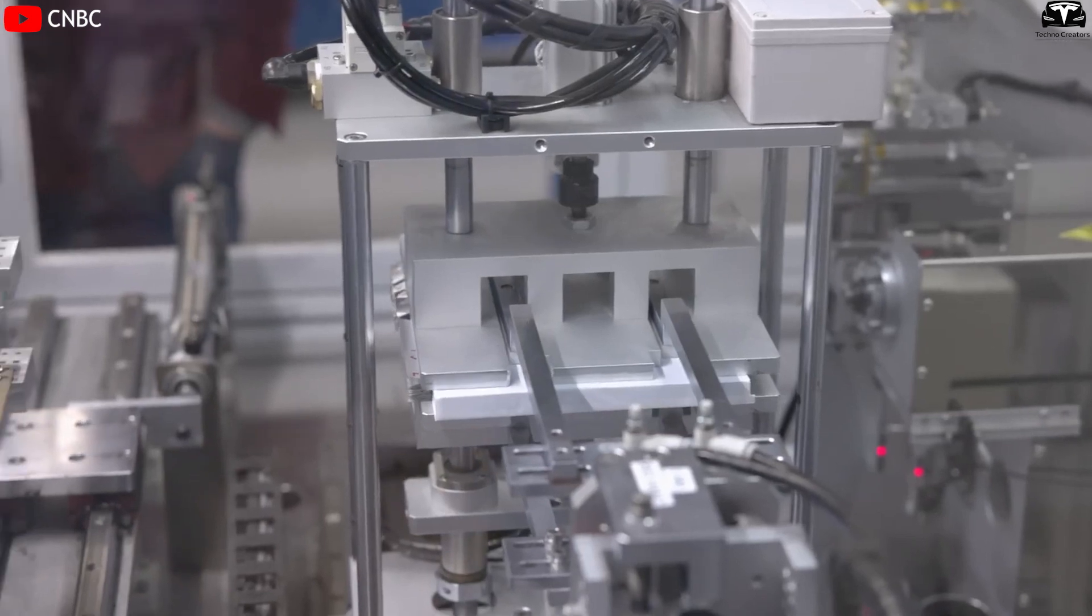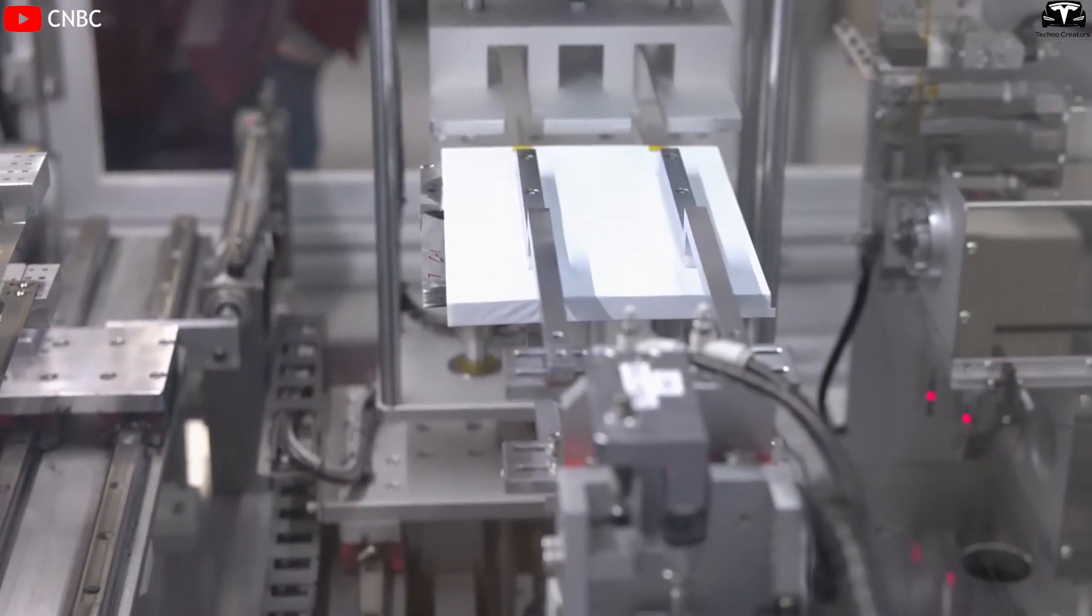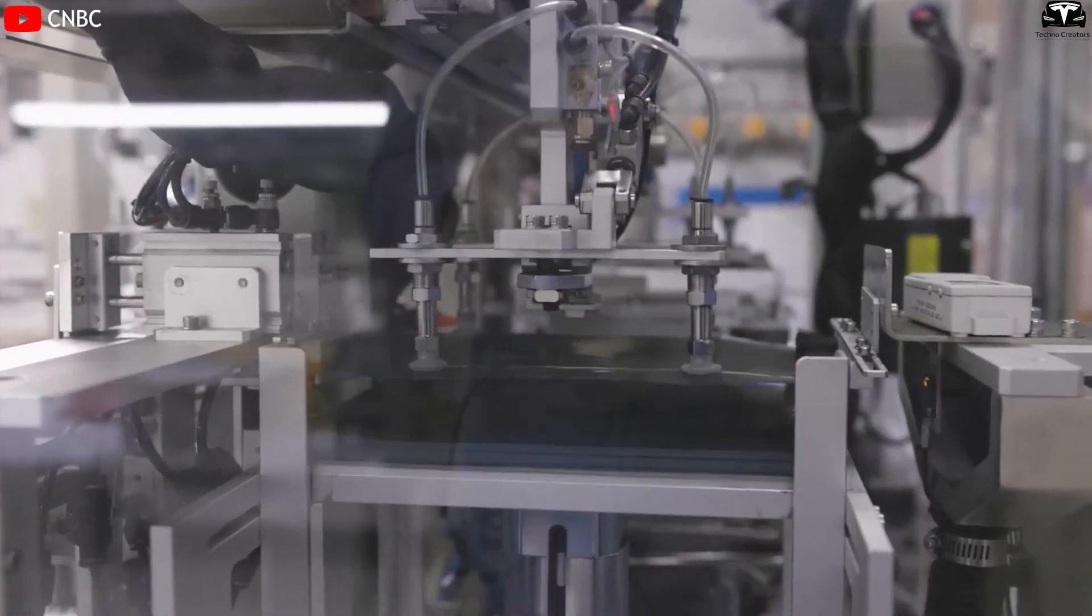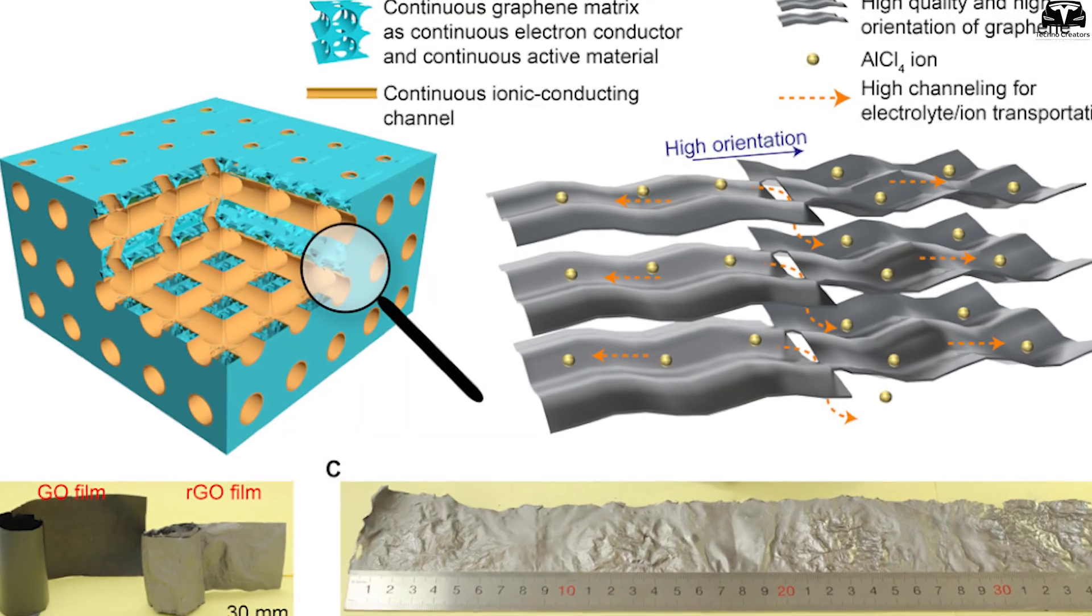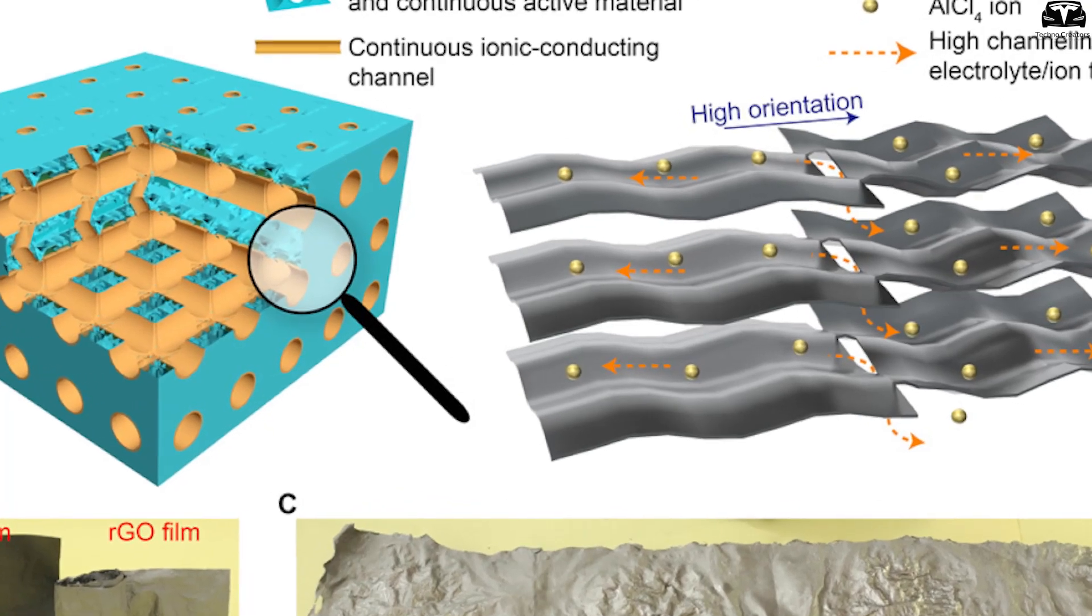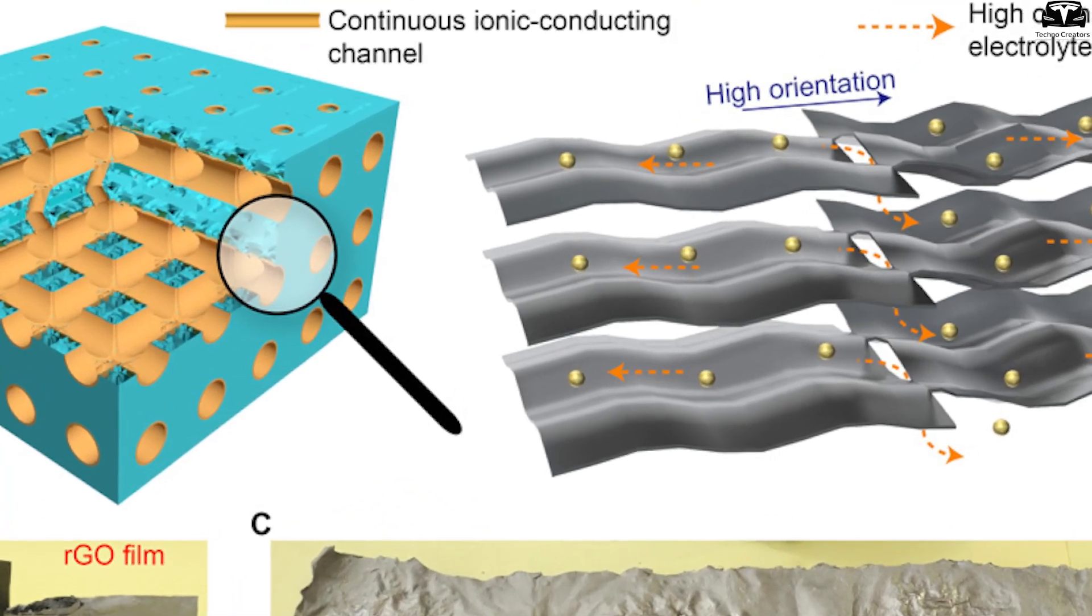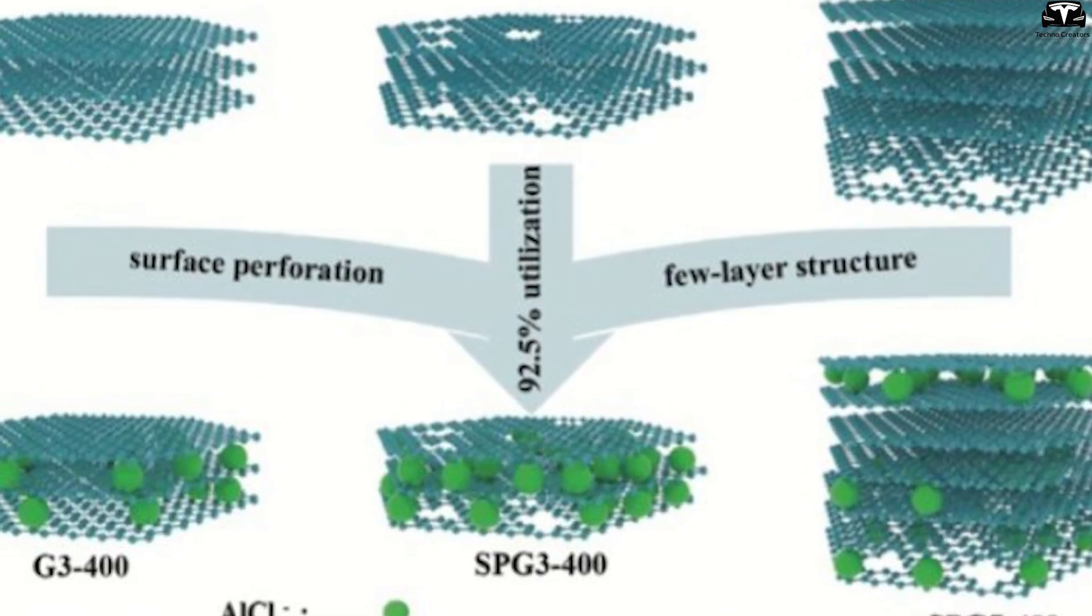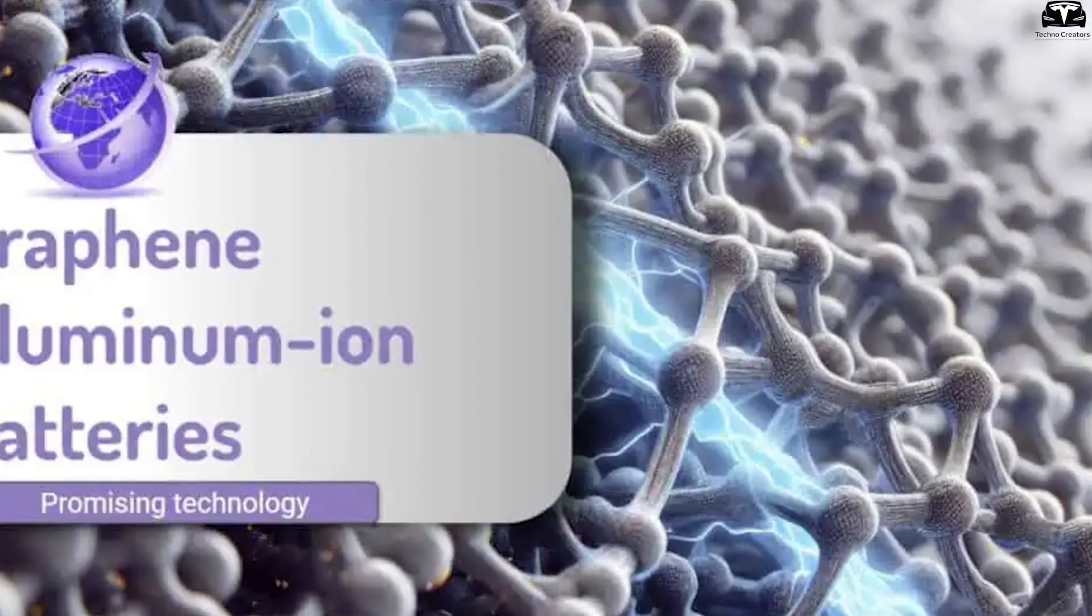One crucial step in manufacturing is electrode fabrication. The graphene aluminum ion battery uses graphene-based cathodes and aluminum anodes. These electrodes require precise layering and binding processes to ensure optimal ionic transport and mechanical stability. Advanced coating technologies apply thin films of graphene onto conductive substrates, maximizing surface area and electrical contact.